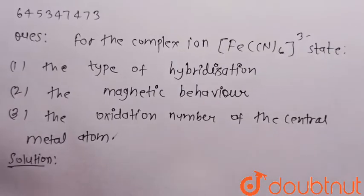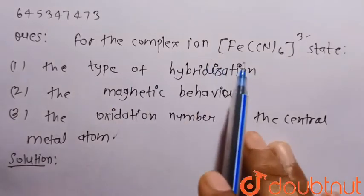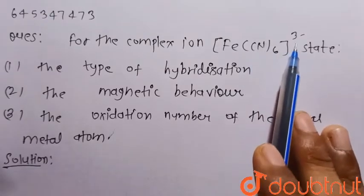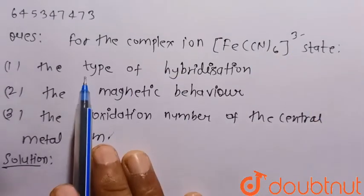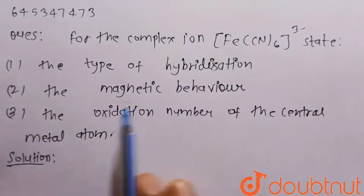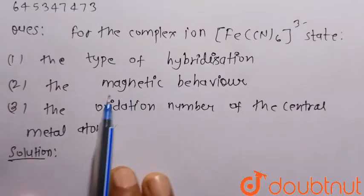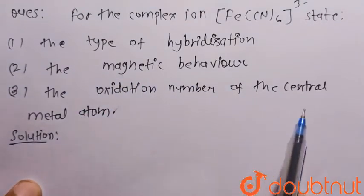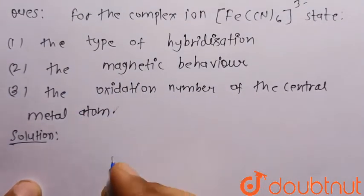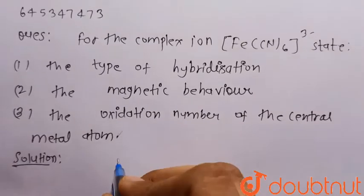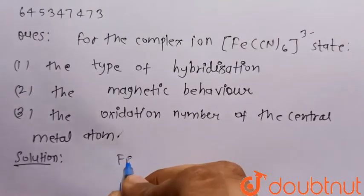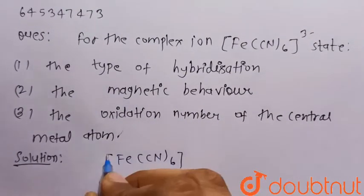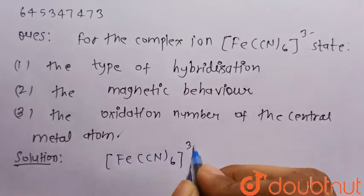Hello everyone. Consider the given question. For the complex ion [Fe(CN)₆]³⁻, we have to find the type of hybridization of this complex, the magnetic behavior, and the oxidation number of the central metal atom.